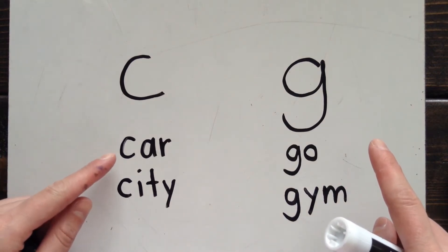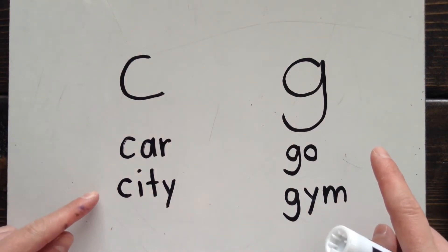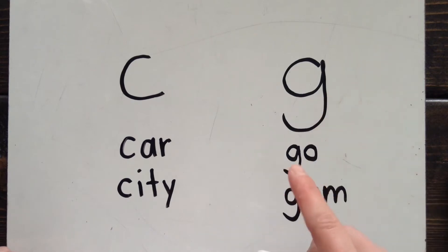Hard C: k. Soft C: s. Hard G: g. Soft G: j. How do you know which sound to pick? Here's a memory trick.